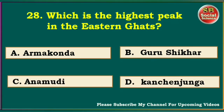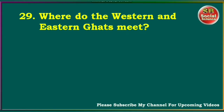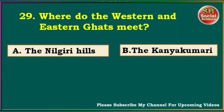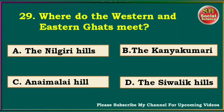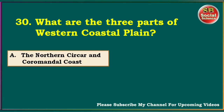Where do the Western and Eastern Ghats meet? The Nilgiri Hills, the Kanyakumari, the Anamalai Hills, the Shivalik Hills. The answer is the Nilgiri Hills. What are the three parts of the Western Coastal Plain? The Northern Sarkars and Coromandel Coast, the Karnataka and Gujarat Coast, the Konkan, Karnataka and Malabar Coast, the Utkal Coast and Malabar Coast.